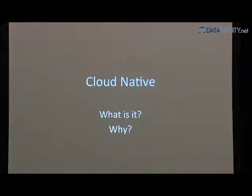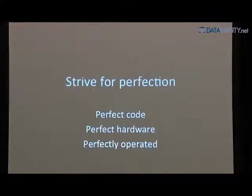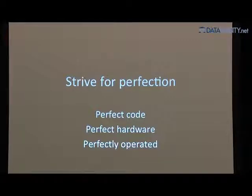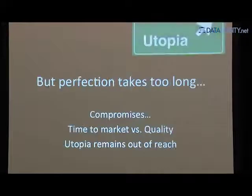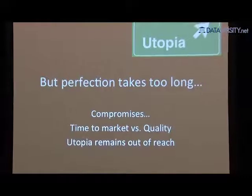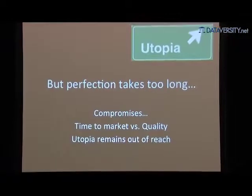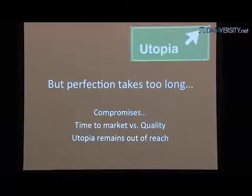So Cloud Native — what is it and why does it matter? We're always striving for perfection: perfect code, running on perfect hardware, with no operational mistakes. That's the engineering ideal, the utopia we're trying to get to. But that utopia takes too long. You always ship code with bugs, and you push the wrong button when operating it. There's always a trade-off between time to market and quality, and these utopias are permanently out of reach.